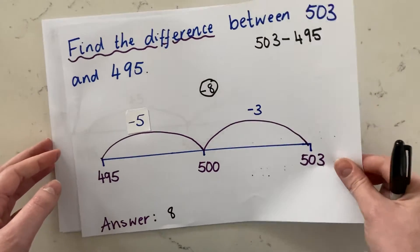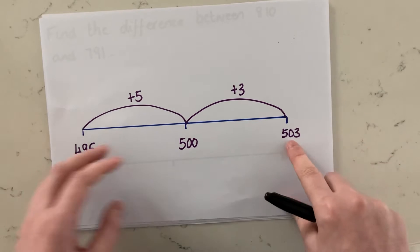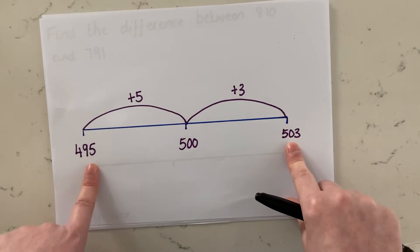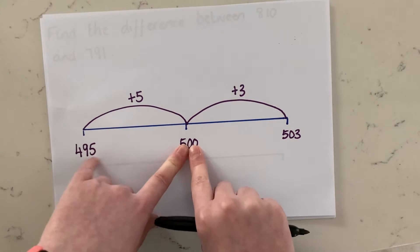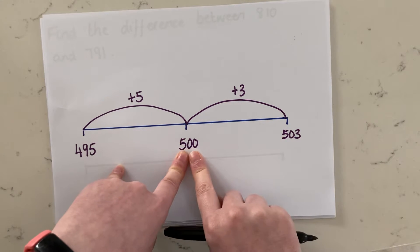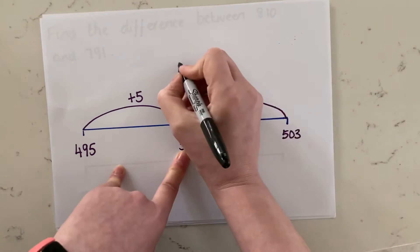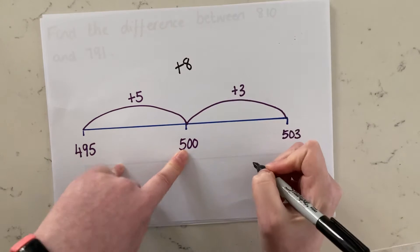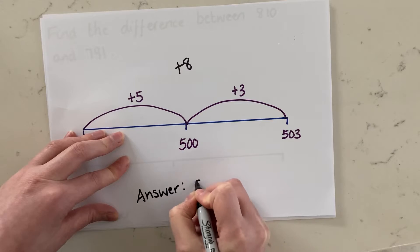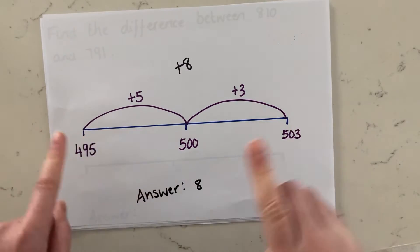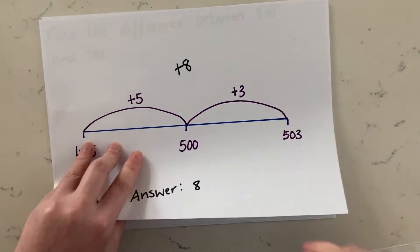If you prefer, for finding the difference today you can do them as an addition sum. So instead of counting back, you can count forward. You can count from 495 and add on five — that takes you to 500. Then from 500 to 503, you need to add on three. So altogether you've added eight. So your answer is still eight. It's up to you which way you want to work — adding or subtracting — you'll get the same answer.